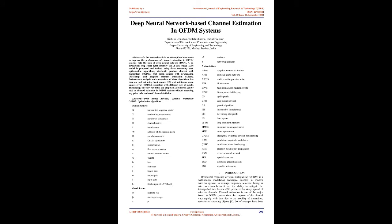Abbreviations: Adam - Adaptive Moment Estimation, ANN - Artificial Neural Network, AWGN - Additive White Gaussian Noise, BER - Bit Error Rate, BPNN - Back Propagation Neural Network, BPSK - Binary Phase Shift Keying, CP - Cyclic Prefix, DNN - Deep Neural Network, GA - Genetic Algorithm, ISI - Inter Symbol Interference, LM - Levenberg Marquardt, LS - Least Square, LSTM - Long Short Term Memory, MMSE - Minimum Mean Square Error, MSE - Mean Square Error, OFDM - Orthogonal Frequency Division Multiplexing, QAM - Quadrature Amplitude Modulation, QPSK - Quadrature Phase Shift Keying, RMSProp - Root Mean Square Propagation, RNN - Recurrent Neural Network, SER - Symbol Error Rate, SGD - Stochastic Gradient Descent, SNR - Signal to Noise Ratio.